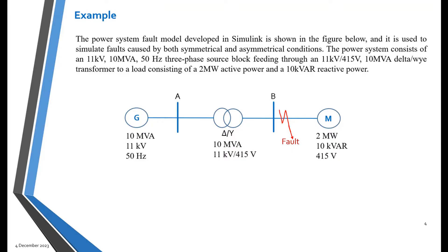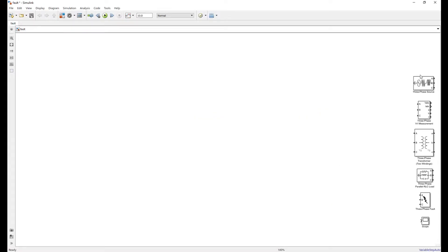The power system fault model developed in MATLAB Simulink, shown in the figure, is used to simulate fault cases under both symmetrical and asymmetrical conditions. The power system consists of an 11 kilovolt, 10 megavolt-ampere, 50 hertz three-phase source feeding through an 11 kV to 415 volt, 10 MVA delta-wye transformer to a load of 2 megawatt active power and 10 kilovar reactive power. Now let's go to MATLAB Simulink to simulate the power system fault model.